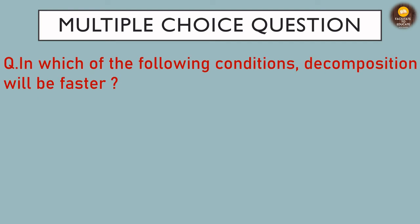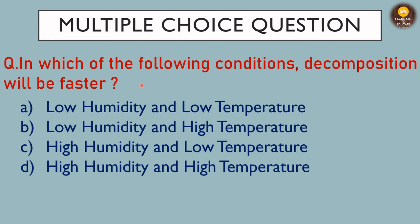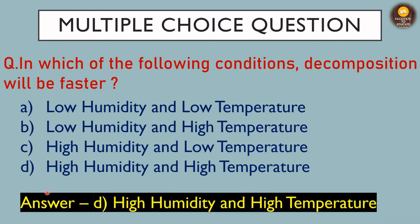The next MCQ asks: in which of the following conditions will decomposition be faster? Options are: (a) low humidity and low temperature, (b) low humidity and high temperature, (c) high humidity and low temperature, (d) high humidity and high temperature. The right answer is (d) — high humidity and high temperature.